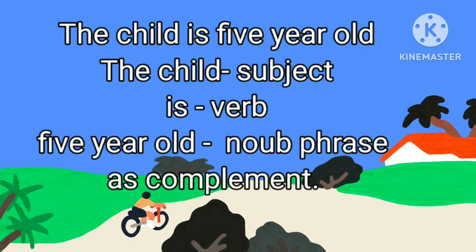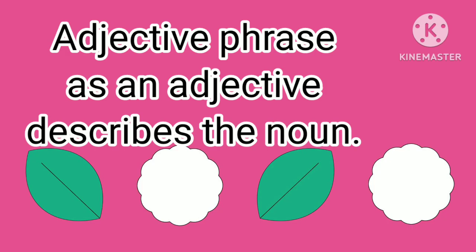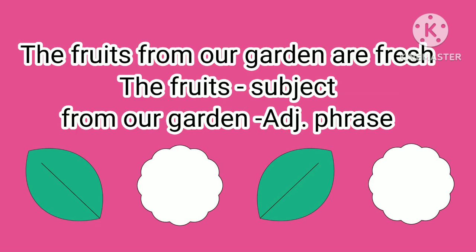The second type is adjective phrase. An adjective phrase acts as an adjective and describes a noun. Adjectives are describing words. If a phrase describes a noun, then it is called an adjective phrase. Example: 'The fruits from our garden are fresh.' In this sentence, 'from our garden' is the phrase. This phrase is an adjective phrase because it describes the noun 'fruits' — it tells from where they came. So, this phrase is called an adjective phrase.